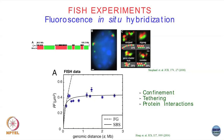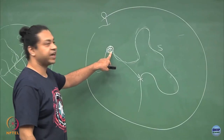In FISH, if you want to know where a particular sequence of DNA is, you create a complementary probe — exactly the complementary sequence to the region of interest. So if the target is AT TA, the probe would be TA AT. You attach a fluorescent marker to this probe, and it goes and binds to that specific region of the DNA. This tells you inside the nucleus exactly where that segment of the DNA is located.